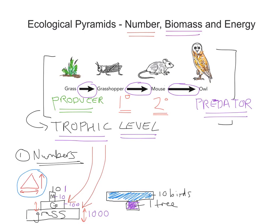Now we're going to move on to the Pyramid of Biomass. Biomass refers to actual biological matter or material that makes the organism up. One key consideration is that to be more accurate, you would want to measure the dry biomass of an organism. It's difficult because you'd actually have to kill the organism to do so. Since water has no energy value, you need to drain the organism of water to find its true biological mass — that's called the dry biomass.